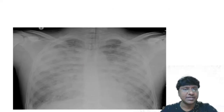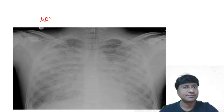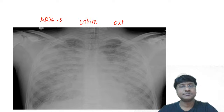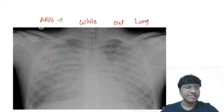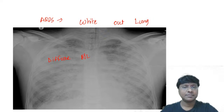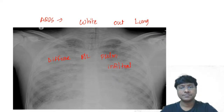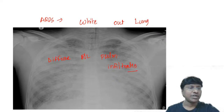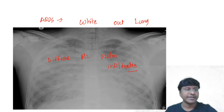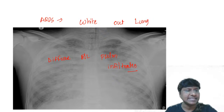The chest X-ray of ARDS is called the white-out lung. It shows diffuse bilateral pulmonary infiltrates. Note that air bronchograms are classically seen in lobar pneumonia, not primarily in ARDS.